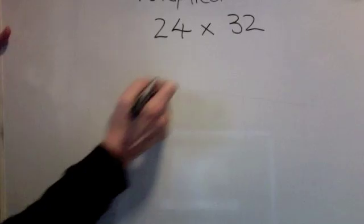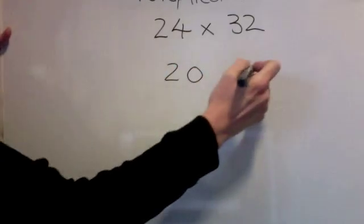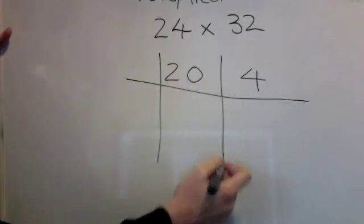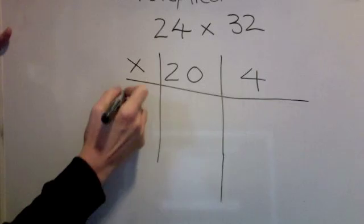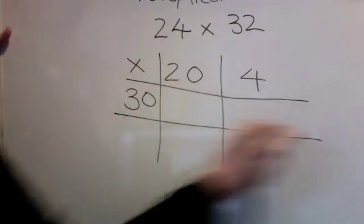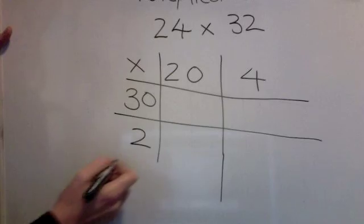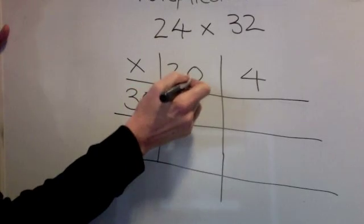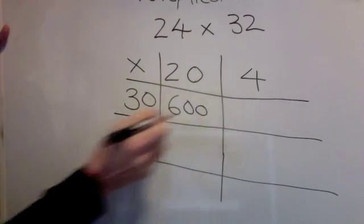Here's the answer. 20 and 4 in a grid. Times 30 and 2. 3 times 2 is 6, one, two zeros, one, two.